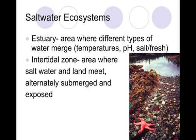We're going to first talk about saltwater ecosystems, which goes along with our tank — we checked temperature, pH levels, and ammonia levels. An estuary is where different types of water merge, where we can get waters of different temperatures, different salt content, and pH levels. You get a unique ecosystem there because some organisms can tolerate those changes and some cannot. The intertidal zone is an area where saltwater and land meet, where the water alternately submerges and then recedes, exposing the land.